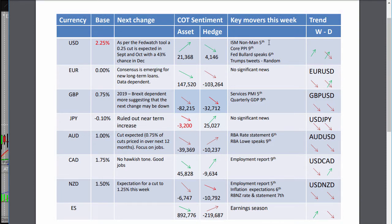Key events this week: ISM non-manufacturing came out today and was positive but slightly less than expected. Core PPI is coming out on the 9th — Friday. On Tuesday we've got Fed's Bullard speaking, and later in the day of course Trump's tweets, which are always random, so goodness knows what will happen there.